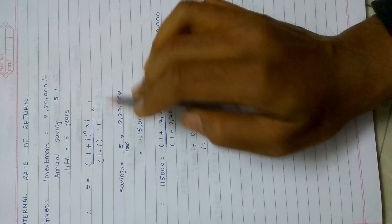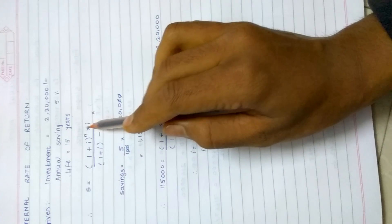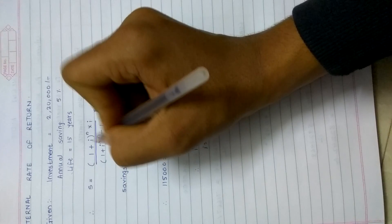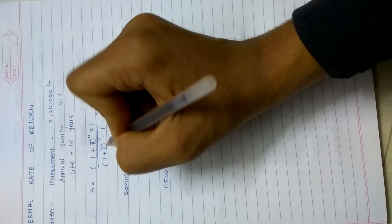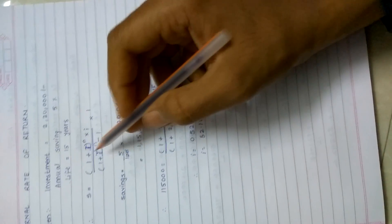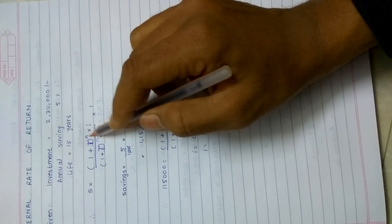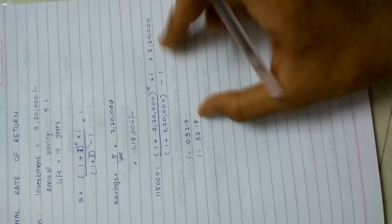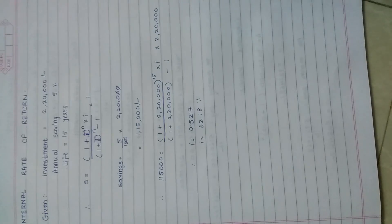The formula for IRR is: S equals [(1 plus i) raise to n into i] divided by [(1 plus i) raise to n minus 1] equals investment (I). We have to find out i. Let's consider it as capital I for investment and small i for the internal rate of return. We have investment 2 lakh 20 thousand, savings 1 lakh 15 thousand, term 15 years. Putting all the values in the equation, you can easily calculate i. Multiplying by 100, you get the percentage: 52.18 percent.